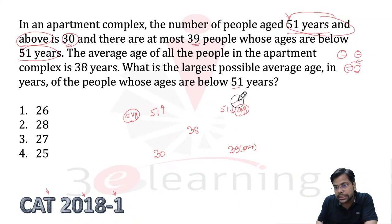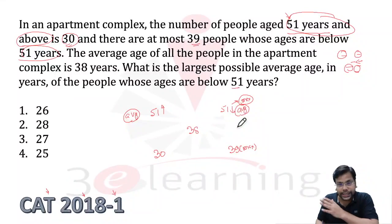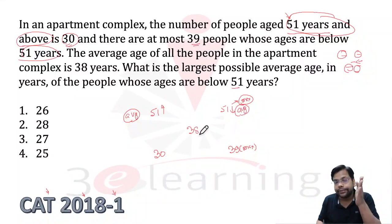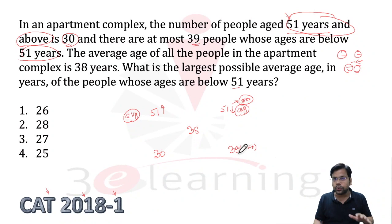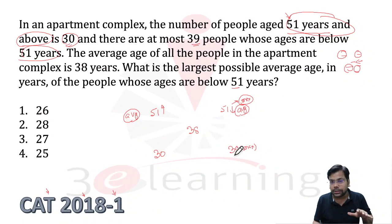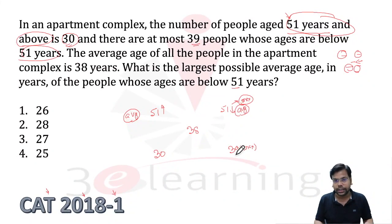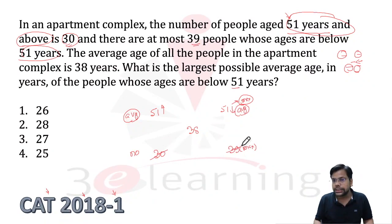One approach: why not solve with the given data first, then do something else? I want to explain the concept of this question. Solve with the given data first. The number of people below 51 — let's take the maximum, which is 39.